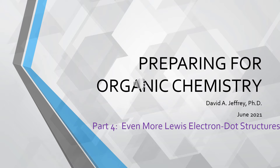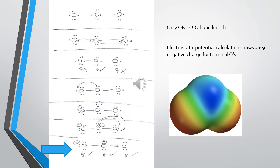Welcome to part four of preparing for organic chemistry: even more Lewis electron dot structures. If you recall in the previous video, we went through the Lewis electron dot structures for five formulas. The last one we did was ozone, O3. We worked this out and concluded that this was a valid Lewis electron dot structure for ozone, since all three oxygens have their octets satisfied.